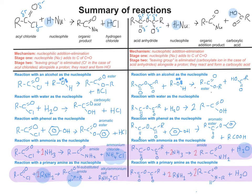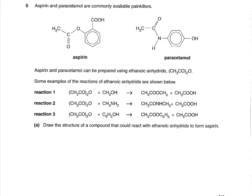Let's now have a go at an exam question. This one is about medicine — aspirin and paracetamol, two commonly known headache remedies — applying some of the reactions we've talked about. The question gives you the structures of aspirin and paracetamol so you can see the functional groups clearly, and also gives you three example reactions of ethanoic anhydride: reaction one with an alcohol, reaction two with an amine, and reaction three with an alcohol.